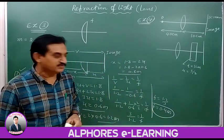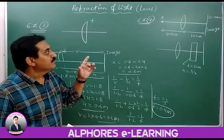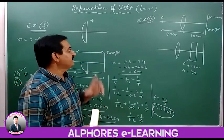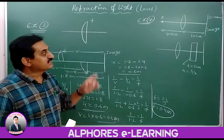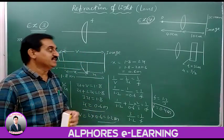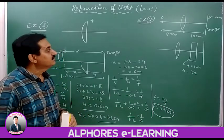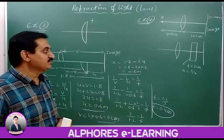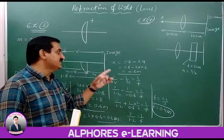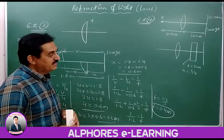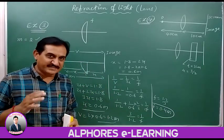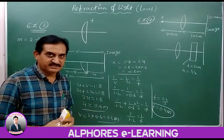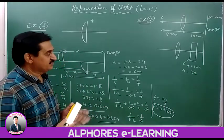The question is: at what distance should the object be placed in order to focus its image on the screen again after introducing the glass plate? So first we go for the calculation of the focal length of the lens.